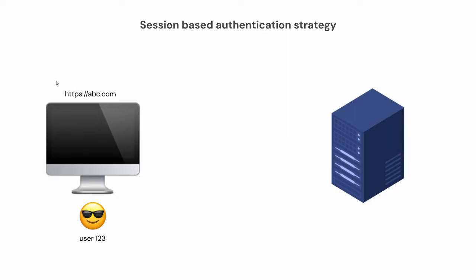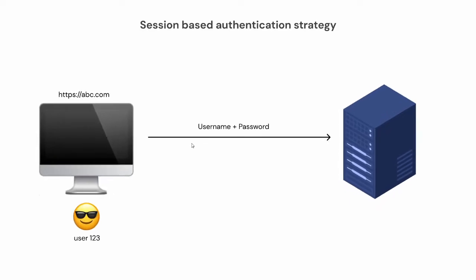Let's say you have an account created for abc.com. When you're trying to log in, you'll first pass in some sort of credentials — for example, username and password. The first thing the backend does is validate the username with what's stored in its database. It will also look at the password and see if it's valid. Once that is done, it will create a session for this user and store it in a separate database, maintaining a session for this user.